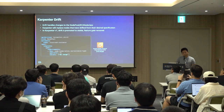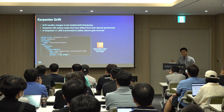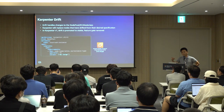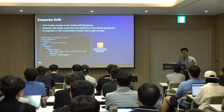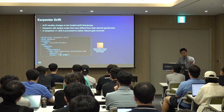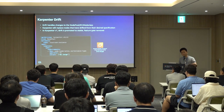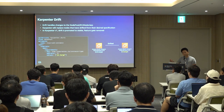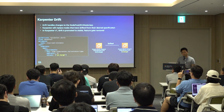Drift manages changes to your node pool and EC2NodeClass. When your requirements change and you update your node pool or node class, the change is automatically applied — similar to a Kubernetes deployment rolling update. When you make a change, Karpenter detects that the resource has drifted from its desired value and applies that drift to ensure the desired state is achieved.